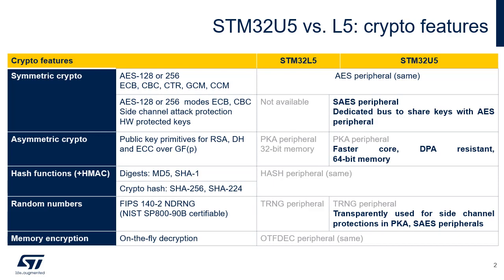Hash functions are implemented similarly in the STM32L5 and STM32U5. Regarding the True Random Number Generator, the STM32U5 supports a new feature: the RNG is transparently used for side-channel protection, feeding random seeds to the PKA and SAES modules when they are enabled.